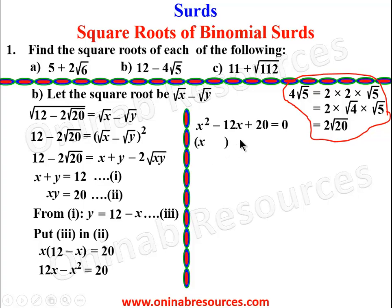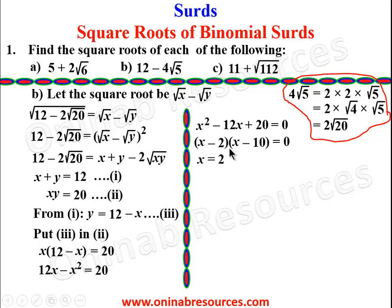Factorizing x² - 12x + 20 = 0, we look for two factors of 20 whose sum gives -12. The factors are -10 and -2. So (x - 2)(x - 10) = 0, giving x - 2 = 0 or x - 10 = 0. Therefore x = 2 or x = 10.